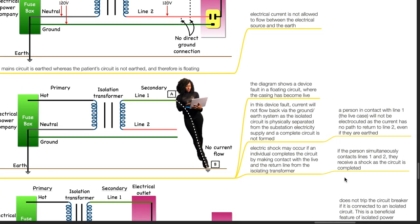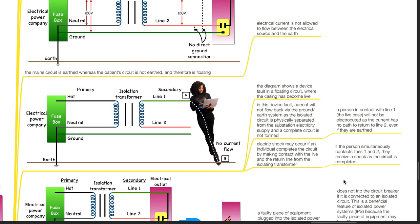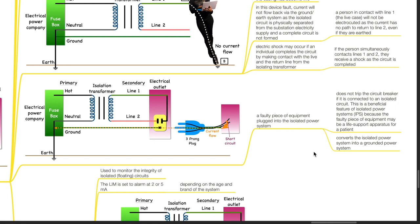The diagram shows a device fault in a floating circuit where the casing has become live. In this device fault, current will not flow back via the ground or earth system as the isolated circuit is physically separated from the substation electricity supply and a complete circuit is not formed. A person in contact with line 1, the live case, will not be electrocuted as the current has no path to return to line 2 even if they are earthed. Electric shock may occur if an individual completes the circuit by making contact with the live and the return line. If the person simultaneously contacts line 1 and 2, they receive a shock as the circuit is completed. A faulty piece of equipment plugged into the isolated power system does not trip the circuit breaker. This is a beneficial feature because the faulty equipment may be life support apparatus. The isolated power system is converted to a grounded power system when this occurs.